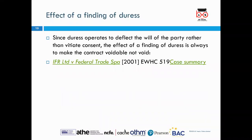Regarding the effect of a finding of duress: since duress operates to deflect the will of the party rather than to vitiate consent, the effect of a finding of duress is always to make the contract voidable, not void, as in the case of IFR Limited v Federal Trade Sparse.